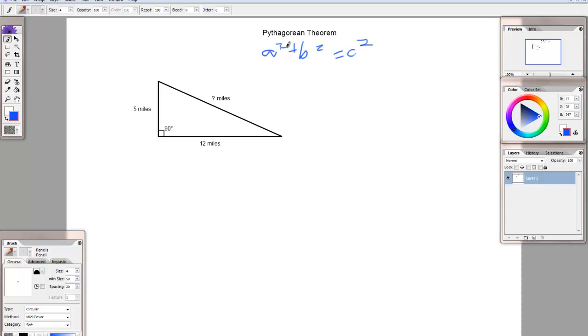Now, a, b, and c all stand for the three sides of the triangle. a and b are the two sides that together make up the right angle. They're the two shorter sides of the triangle. It doesn't matter which one is a and which one is b, but they both have to be the two shorter sides. So, we'll just call this a and this side b.